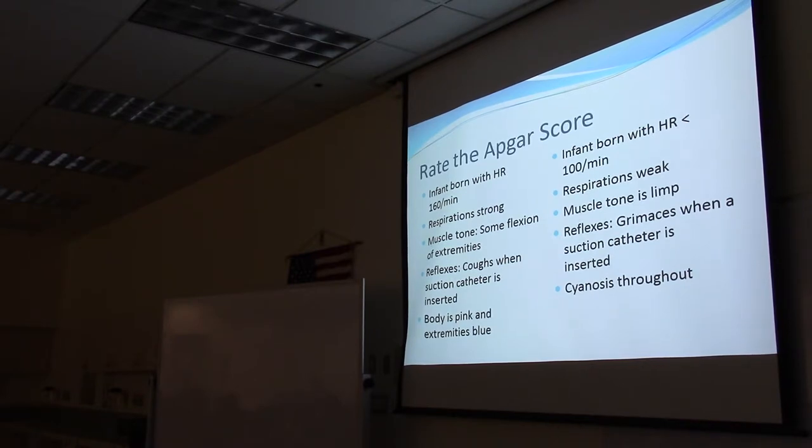What about the next column? Infant born, heart rate is less than 100 per minute. Respirations are weak. Muscle tone is limp. With reflexes, the infant grimaces when a suction catheter is inserted into the nose. And there's cyanosis throughout. You got a three? Yeah, three. Alright. So a score of zero to three, you ventilate. You ventilate with PPV, positive pressure ventilation. And begin compressions if heart rate is less than 60.